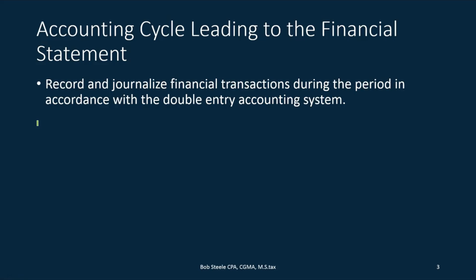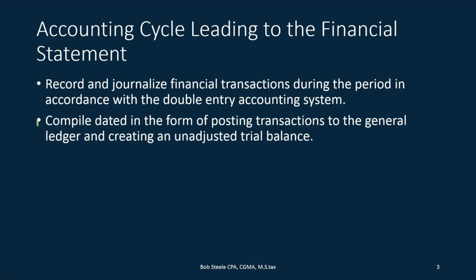So the accounting cycle leading to the financial statements. We're going to record and journalize financial transactions during the period in accordance with the double entry accounting system. That's going to be the first part. Beginning on day one of the month or year, we're going to record transactions throughout that time period, pay the bills, enter the receipts. Then we're going to compile data by posting transactions to the general ledger and create an unadjusted trial balance.